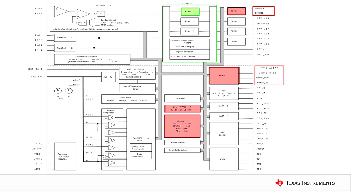We will also introduce the loop multiplexer, which controls the interconnections between the filters, front ends, and DPWM modules. We will also discuss DPWM operation in normal mode, where the filter output modulates the DPWM duty cycle. Thus, we will be one step closer to closing the loop.